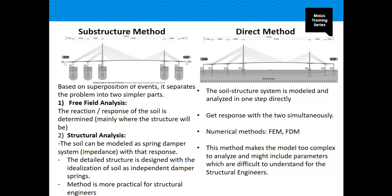Regarding the types of analysis, there are two methods for performing soil-structure interaction. One is the substructure method and the other is the direct method. The substructure method is based on superposition of events — it separates the problem into two parts: free-field analysis, where the reactions of the soil are obtained, and the structural analysis portion, where the soil is modeled with spring dampers. From there, you design the structure with the idealization of soil properties. This is a more practical method for structural engineers since we don't have to go into much detail about soil properties.